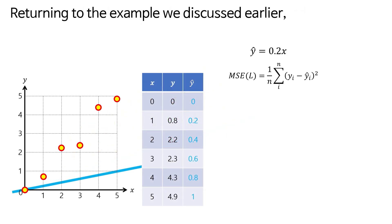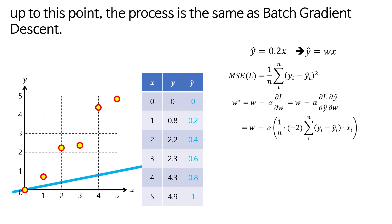Returning to the example we discussed earlier, up to this point, the process is the same as batch gradient descent.